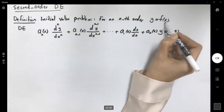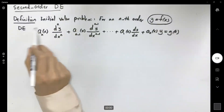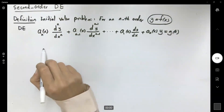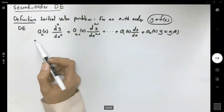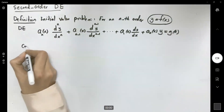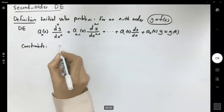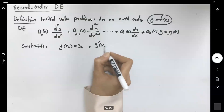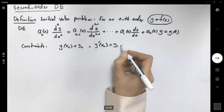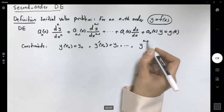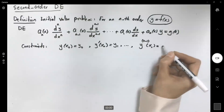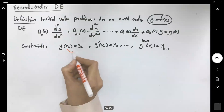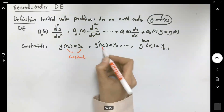Remember that y is a function of x; x is the free variable and y depends on x. That's why the coefficients of the derivatives and y are just functions of x. Then we have the initial value problem, meaning we have constraints. At x_0, y equals y_0; at x_0, the first derivative equals another value; and the (n-1)th derivative of y at x_0 equals y_{n-1}. All of these are constants.